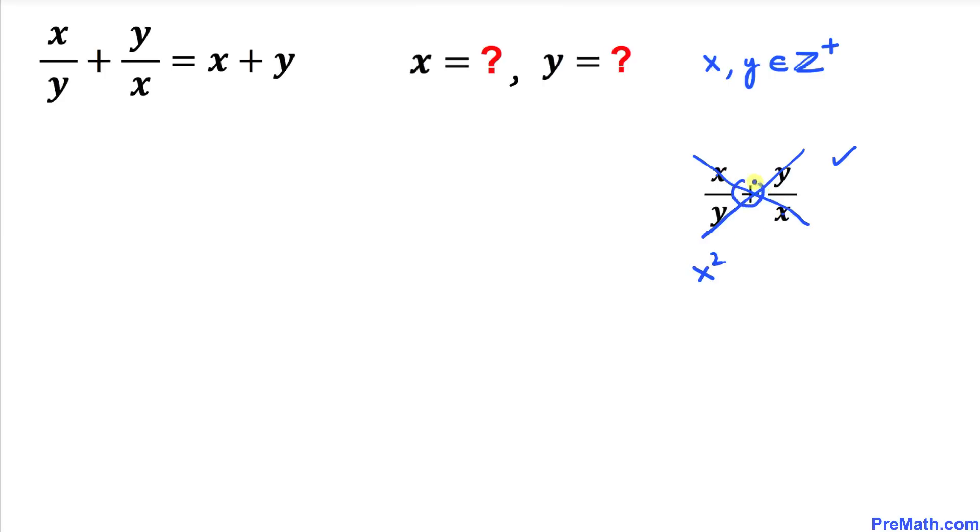We are going to write down this plus sign, and then y times y is going to be y squared, and then divided by—let's multiply out these denominators—x times y, so divided by xy.